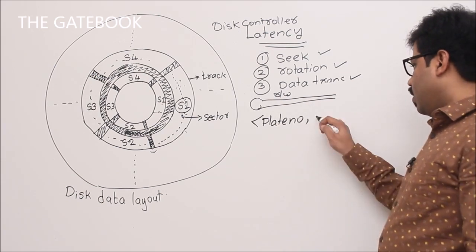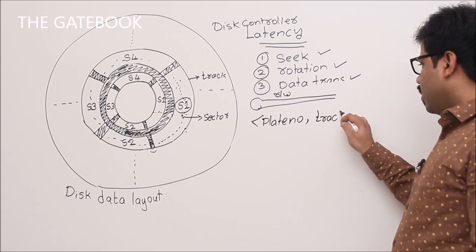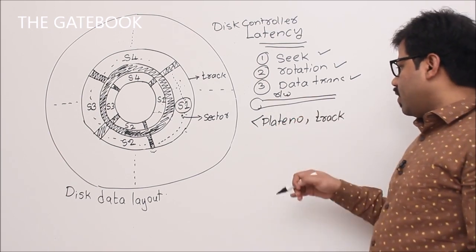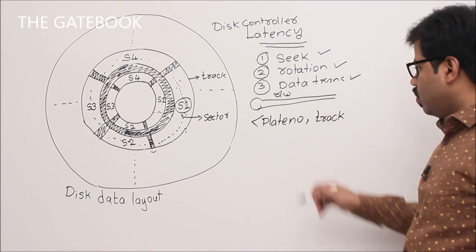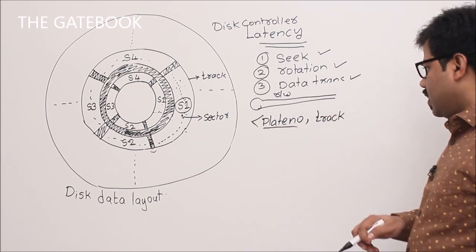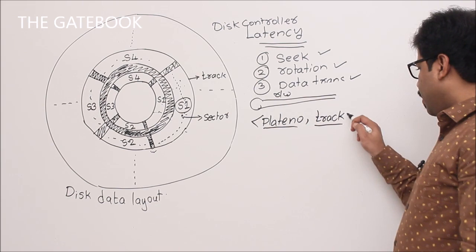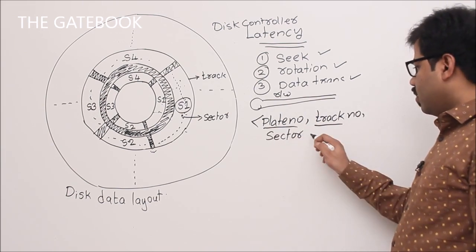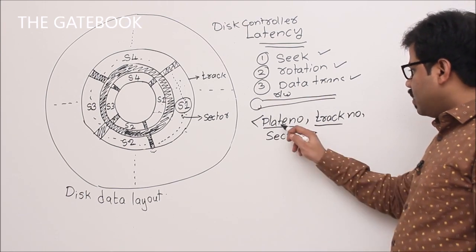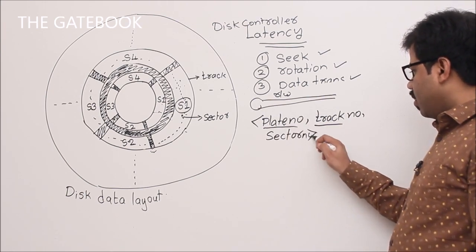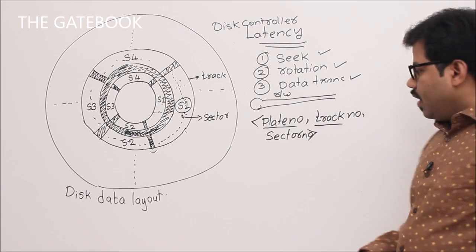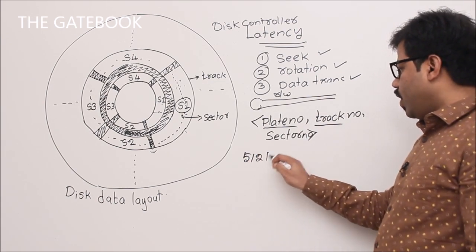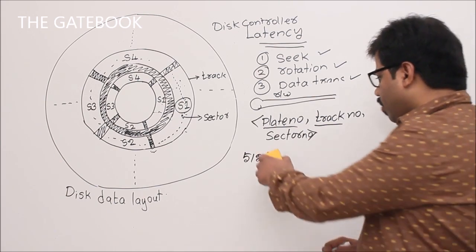Disk addresses have three components: plate number, track number, and sector number. I'm assuming each plate has only one surface; if there are multiple surfaces, the surface number is also specified. Once you specify plate number, track number, and sector number, data is stored at that address.